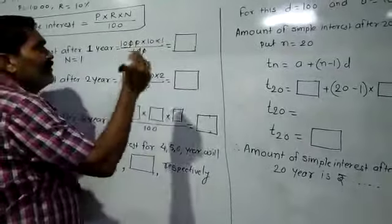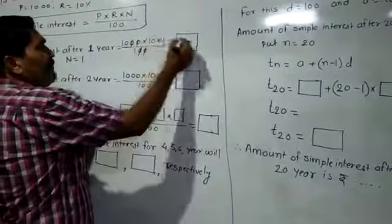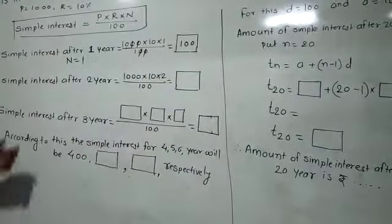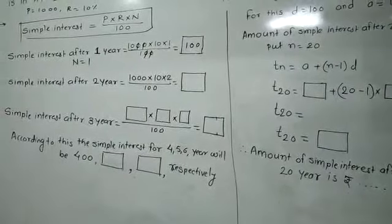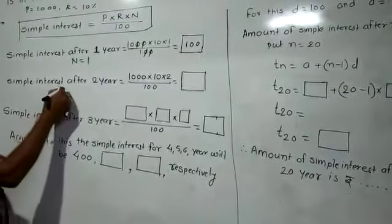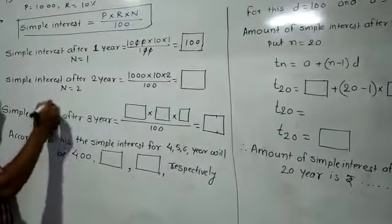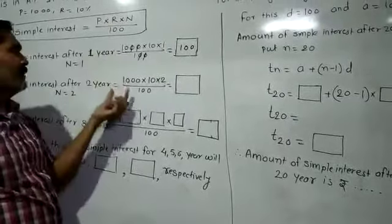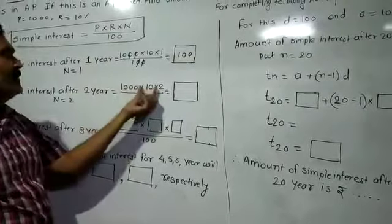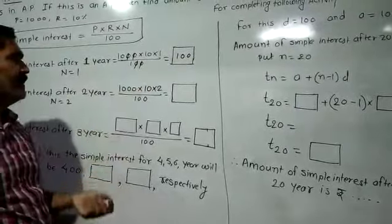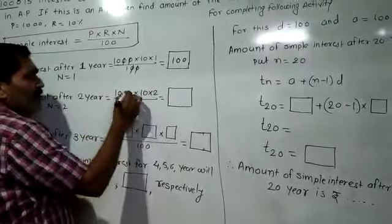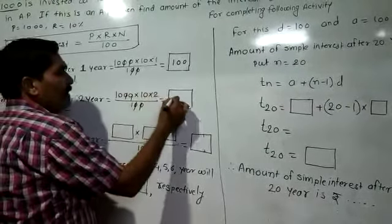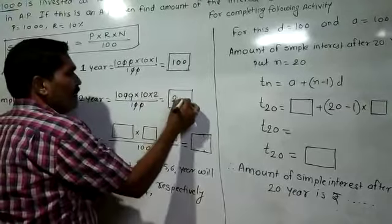Striking the two zeros, 10 × 100 = 100. So simple interest after the first year is ₹100. For the simple interest after the second year, N = 2. Putting the values: 1000 × 10 × 2 ÷ 100. Striking the two zeros, 10 × 2 = 20, and 100 × 2 = 200. So the interest after the second year is ₹200.